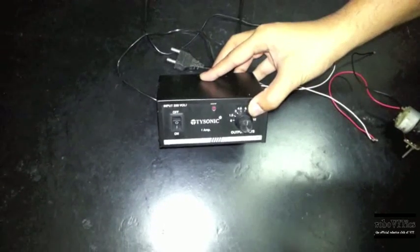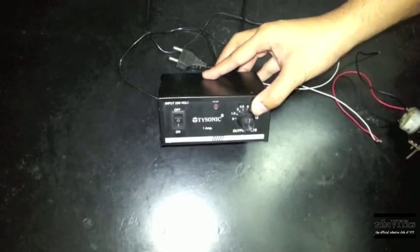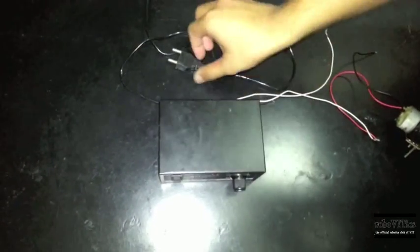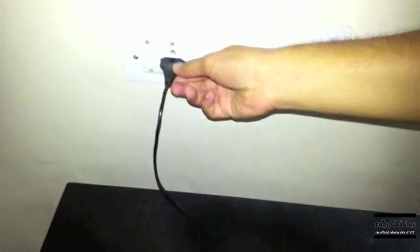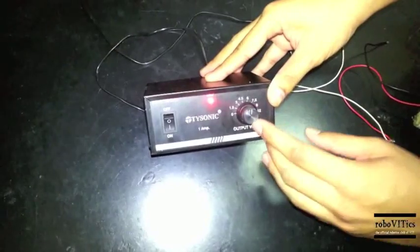This is a battery eliminator with which we will be converting 220 volt AC supply into the desired DC voltage. Now I am going to plug this eliminator into the power switch. As you can see it is turned on. We are setting this eliminator to 6 volts.